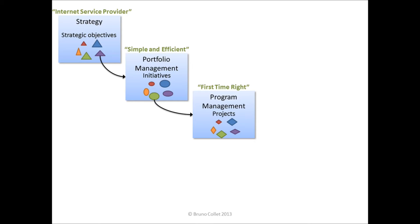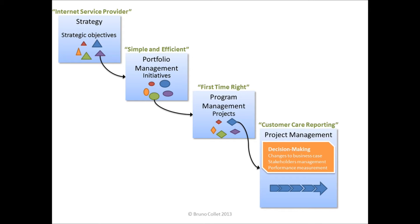Within the program, we have initiatives that are projects, and the goal of the program at decision-making level is to choose which project should be part of it, and to minimize dependencies, optimize the use of resources, and maximize business benefits. One such project is customer care reporting. To enable First Time Right, the organization has to understand what are the interactions it has with the customers. At project management level, there are many activities. Only part of them are what we could call decision-making — the activities that affect the business — such as the business case, dealing with stakeholders at decision-making level, and measuring performance to enable decision-making.